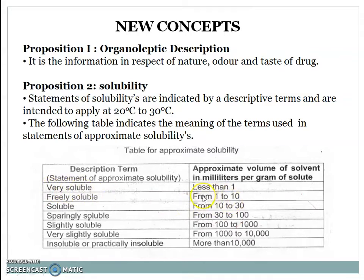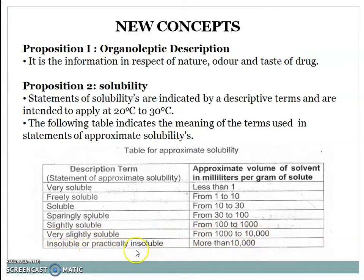If a compound is very soluble, it is soluble in less than 1 ml of solvent. Freely soluble means 1 to 10 ml of solvent. Soluble means 10 to 30 ml. Sparingly soluble means 30 to 100 ml. Slightly soluble means 100 to 1000 ml. Very slightly soluble means 1000 to 10,000 ml. And insoluble or practically insoluble requires more than 10,000 ml of solvent.